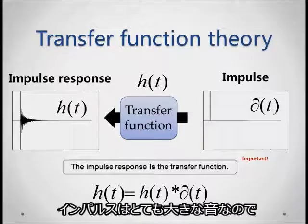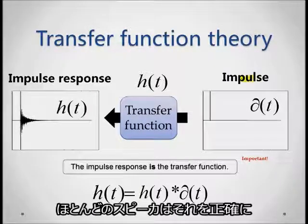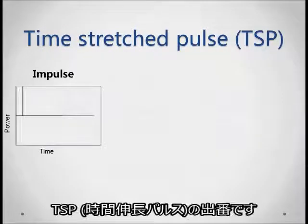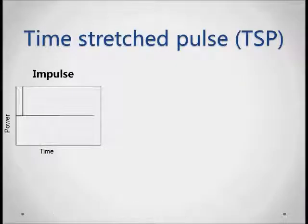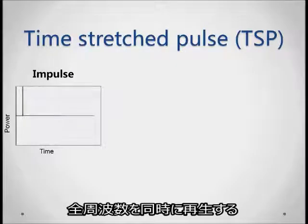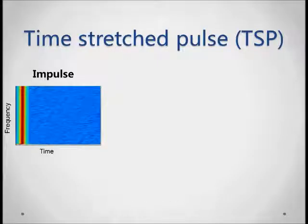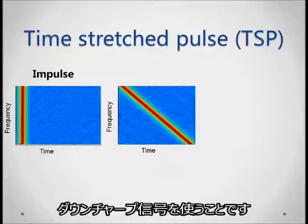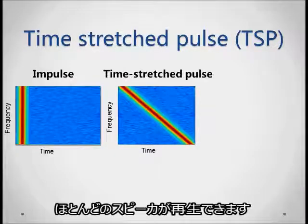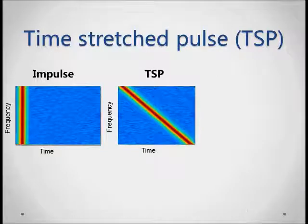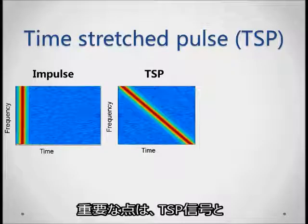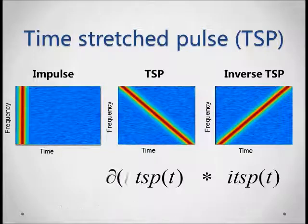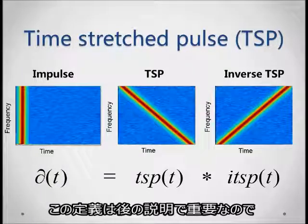The only problem is that impulses are so loud that most speakers aren't capable of playing them. Enter the time-stretched pulse, or TSP. Instead of playing an impulse, which contains all frequencies played at the same time, we stretch out the frequencies over time, resulting in what sounds like a downward chirp. This is called the time-stretched pulse, or TSP, and it's something that speakers can play. The neat part is that convolving a TSP with its inverse gives us our desired impulse delta. This definition is important for understanding later on, so please remember it.